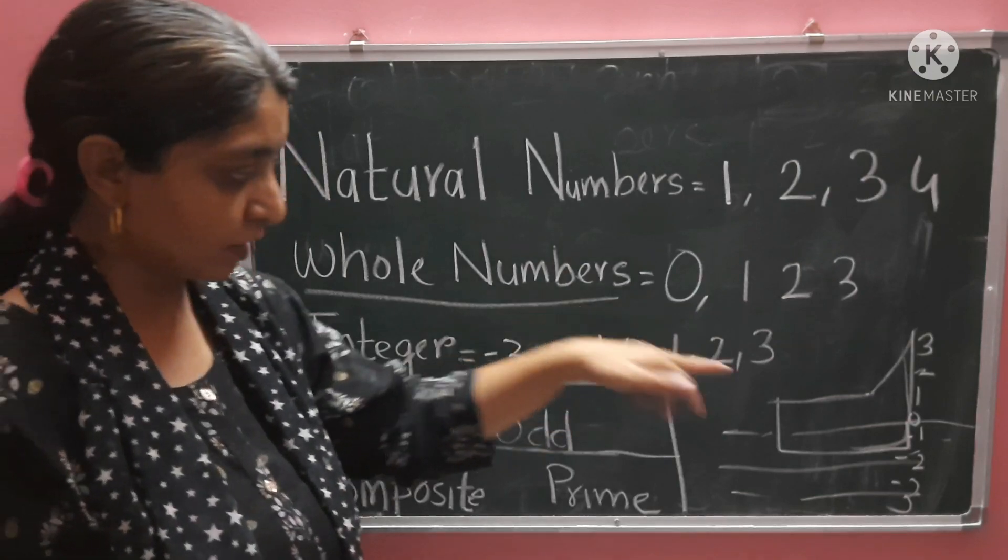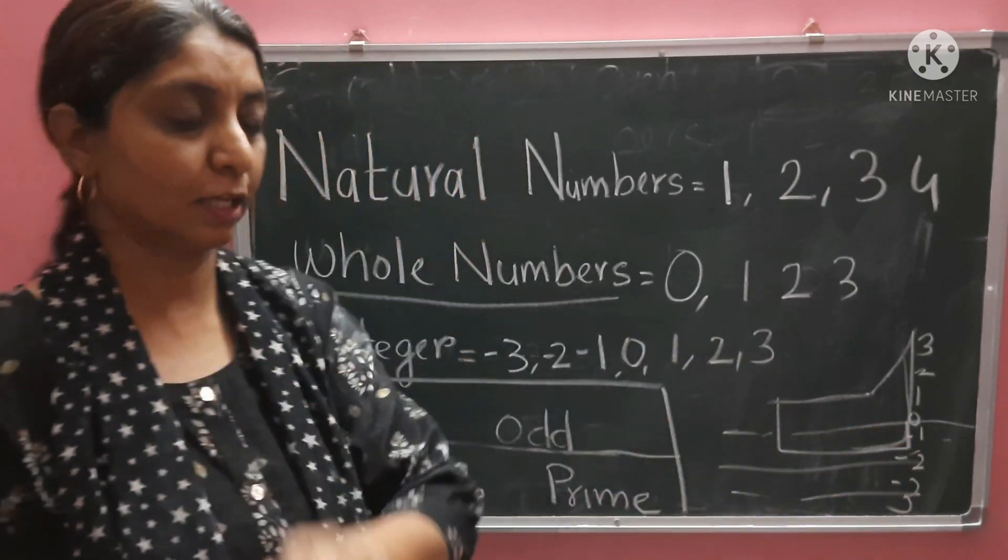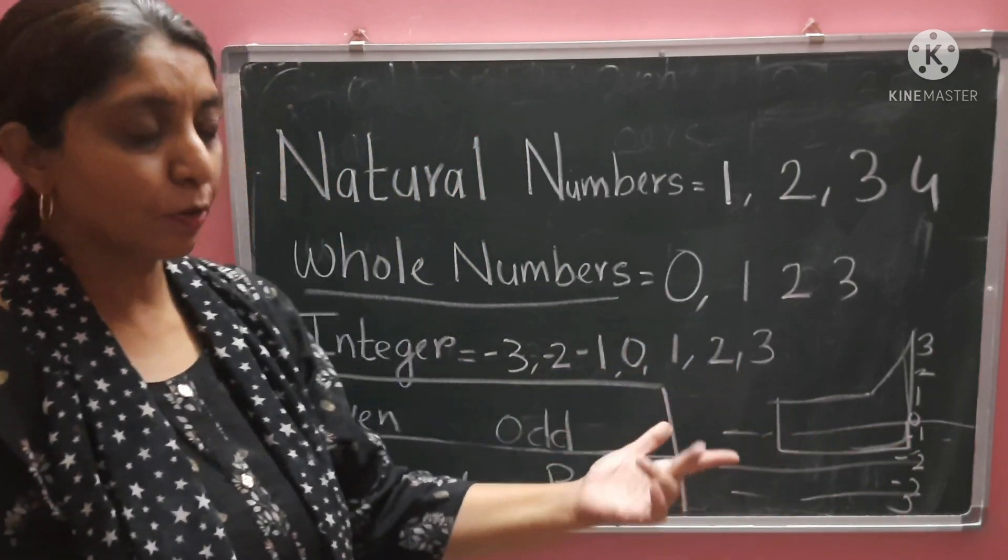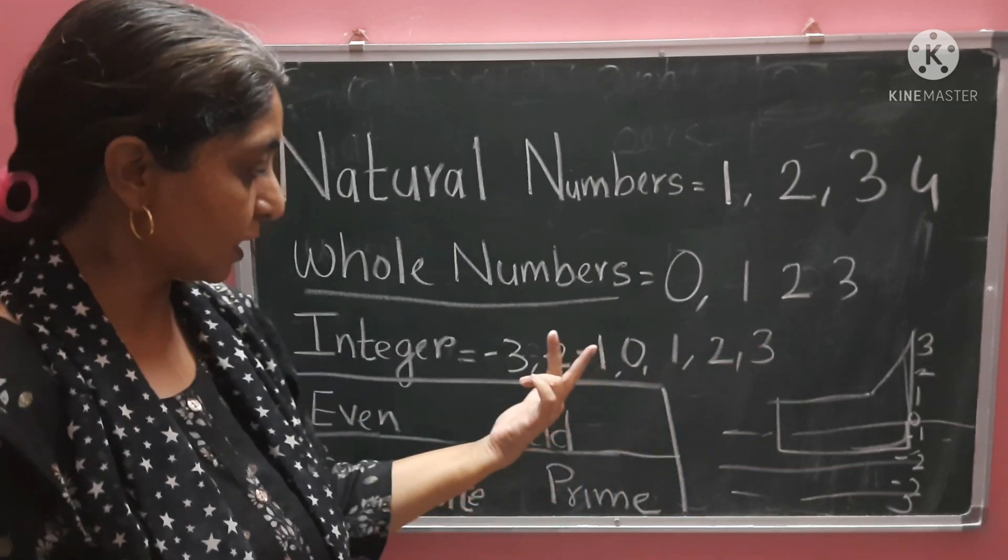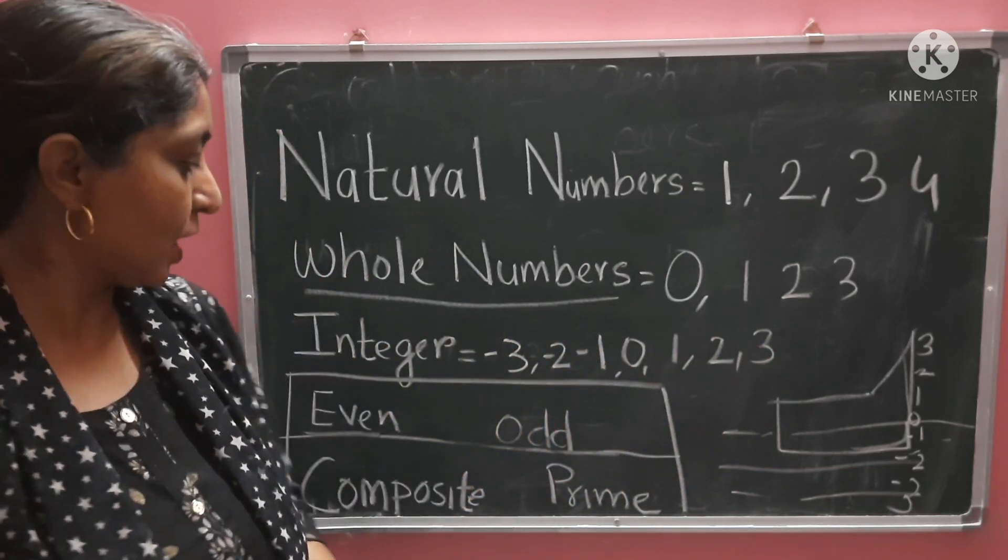So, all the negative numbers have a minus sign. Positive numbers don't have any sign. But negative always has a minus sign.